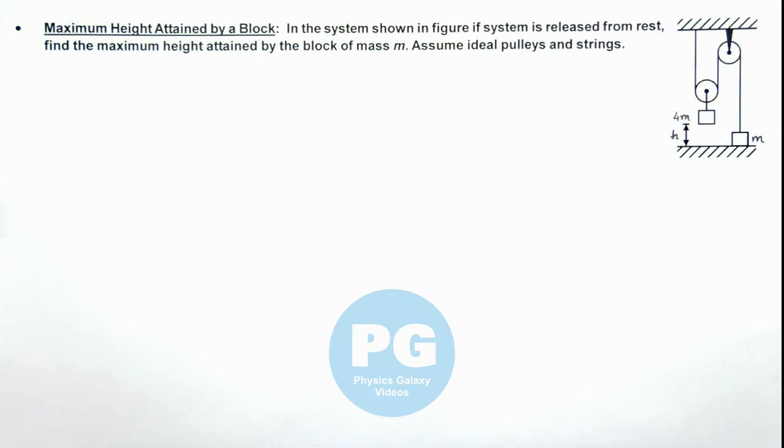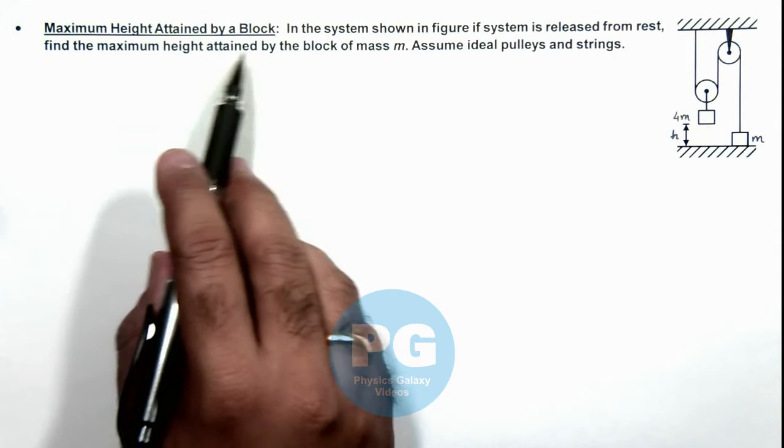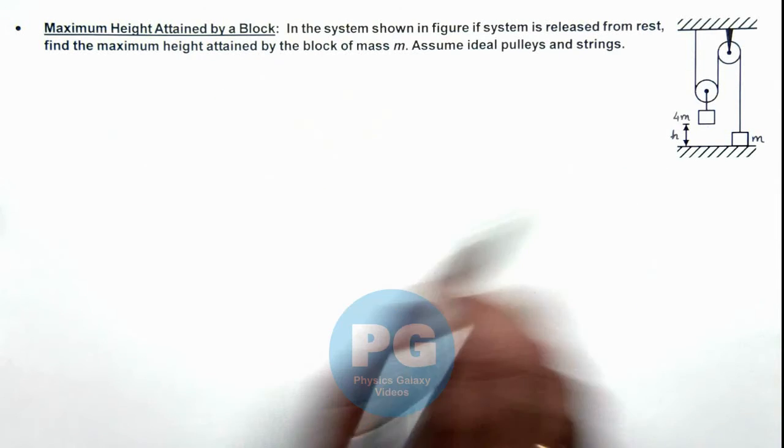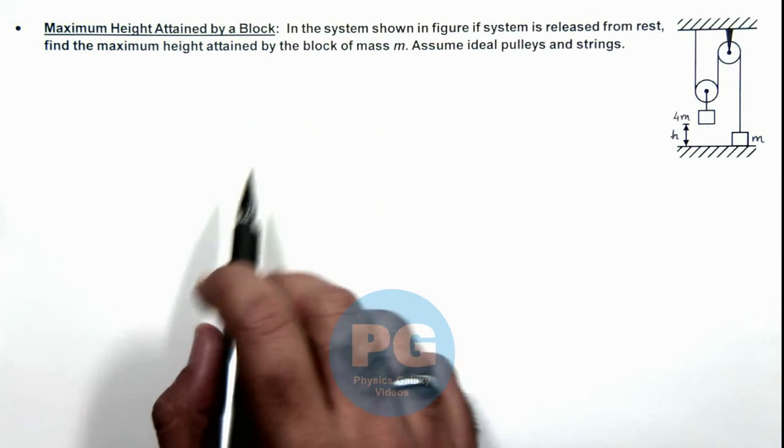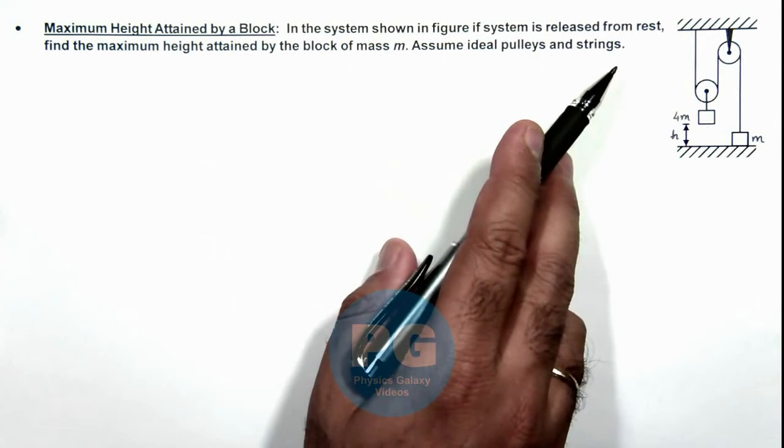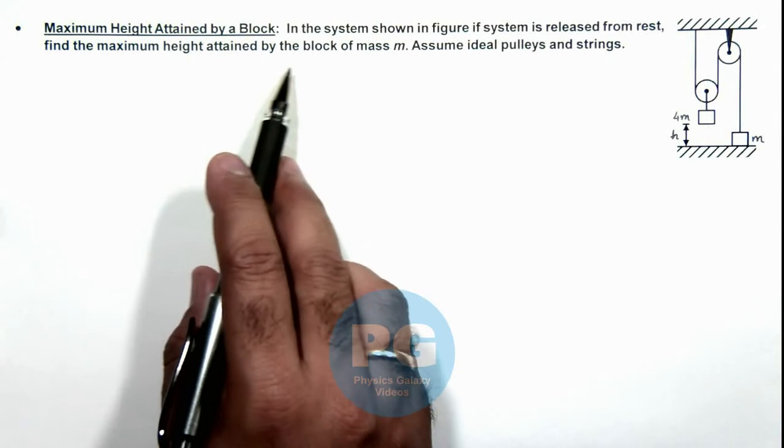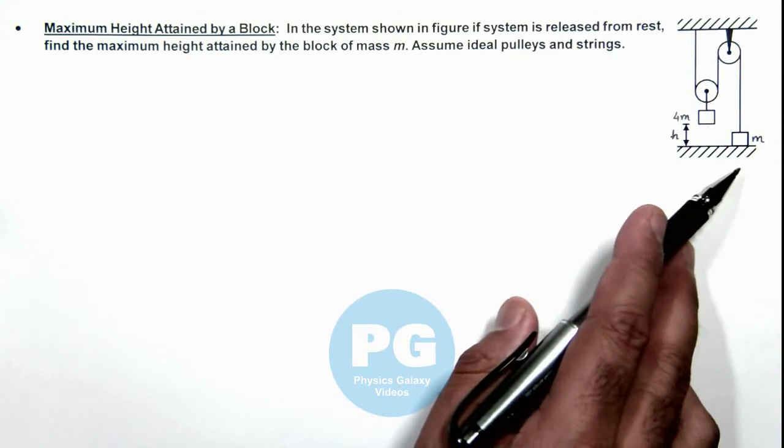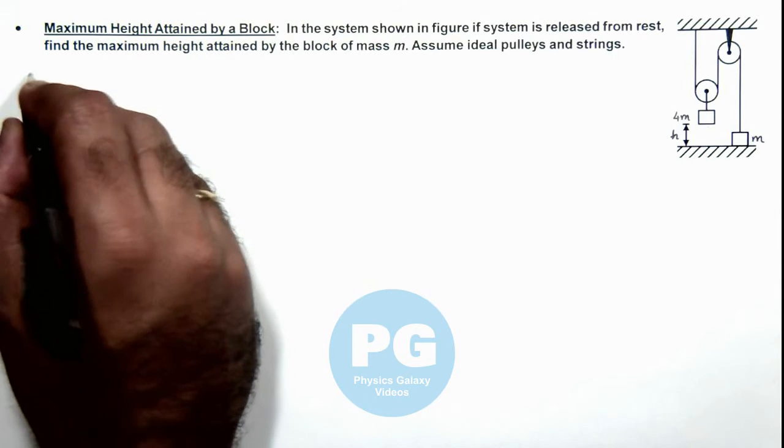In this illustration we'll discuss the maximum height attained by a block in the system shown here. We are given that the system is released from rest, and we are required to find the maximum height attained by the block of mass m. We can assume ideal pulleys and strings.